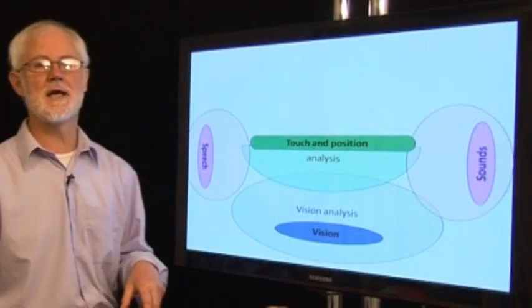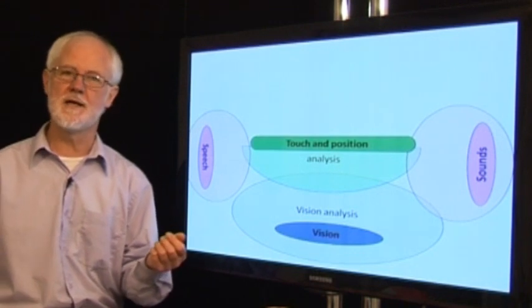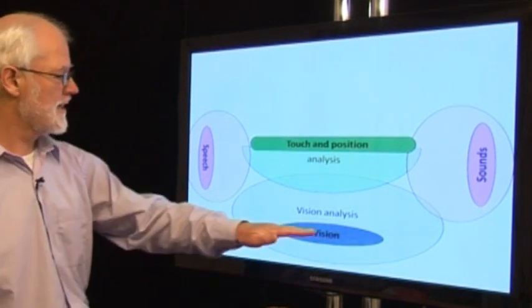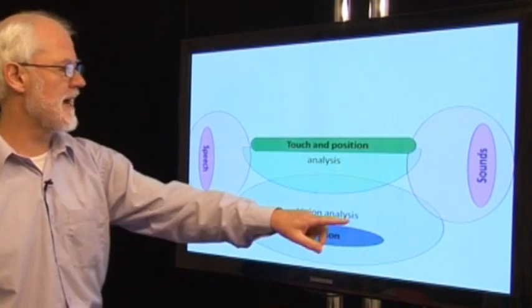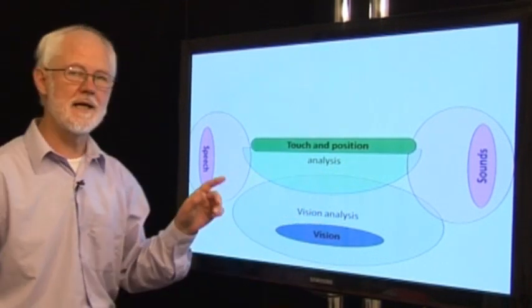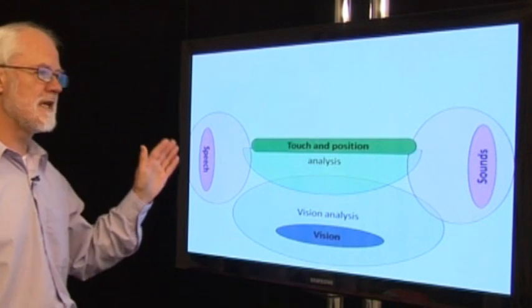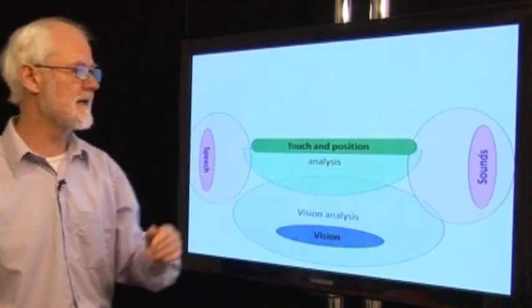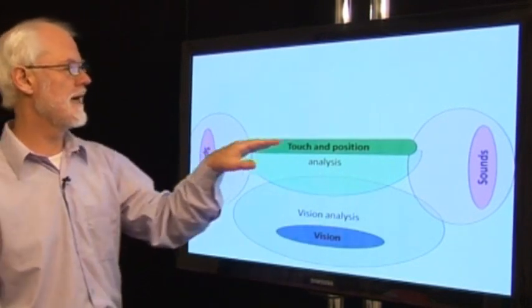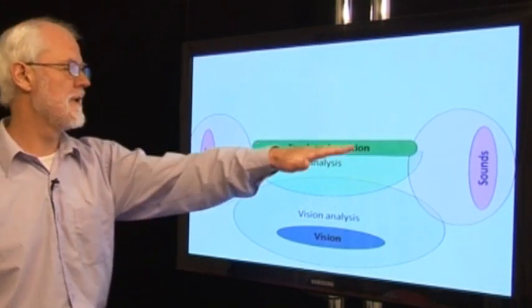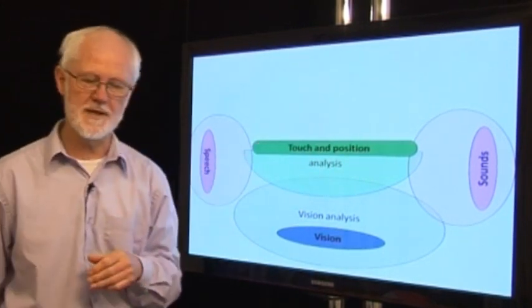We can put these three inputs onto a flat diagram. We can have vision being received at the back and analyzed around it. We can have sound being received on both sides and analyzed in two different ways. And the touch and body position along the middle being analyzed in this area just behind it.